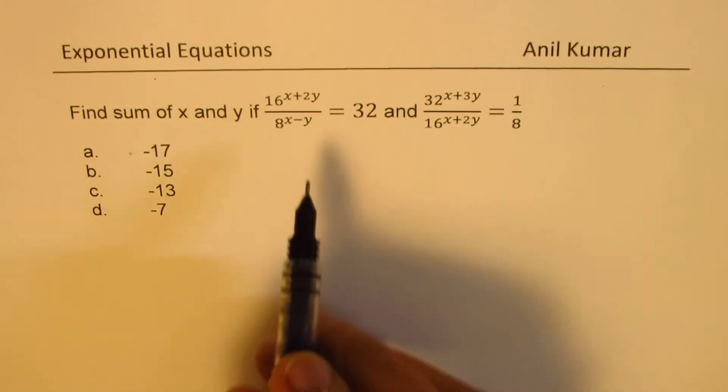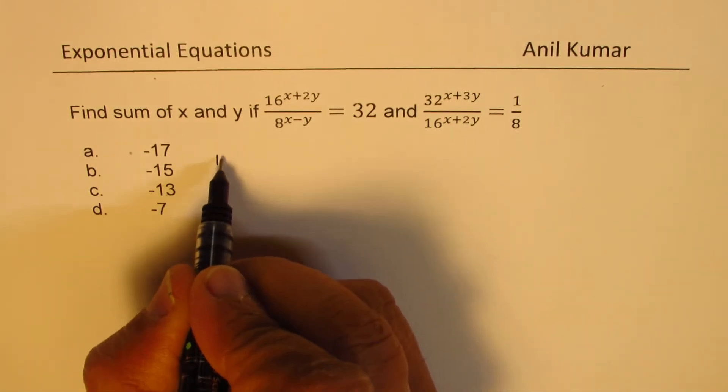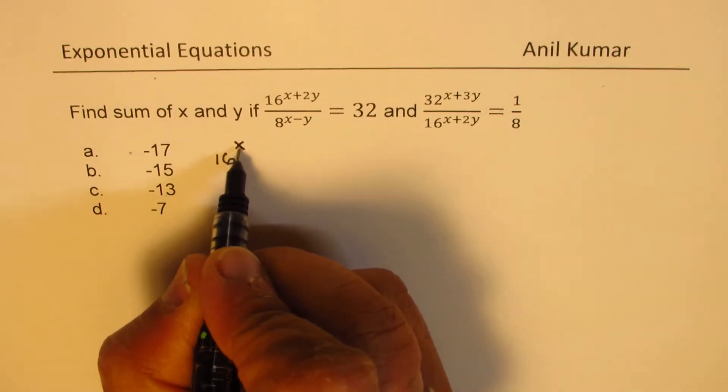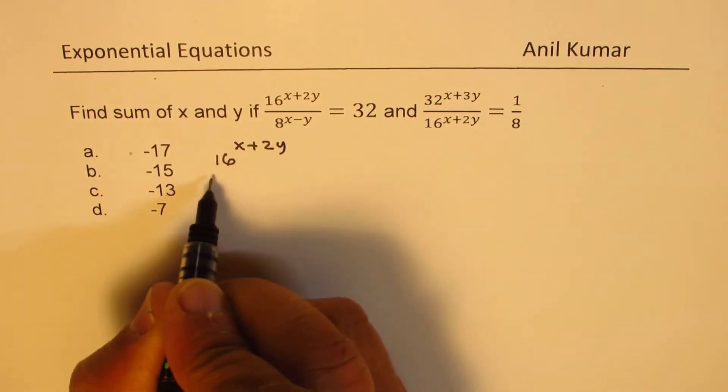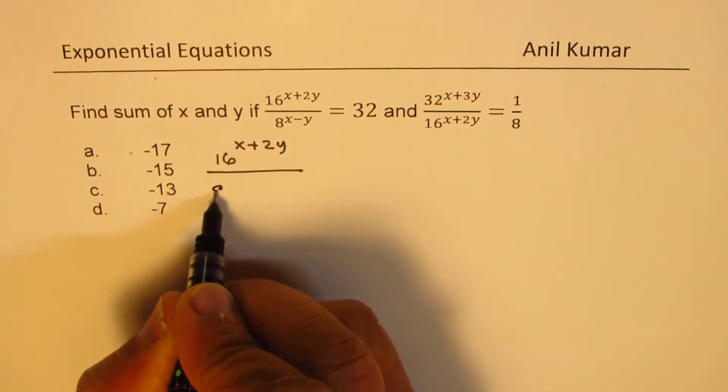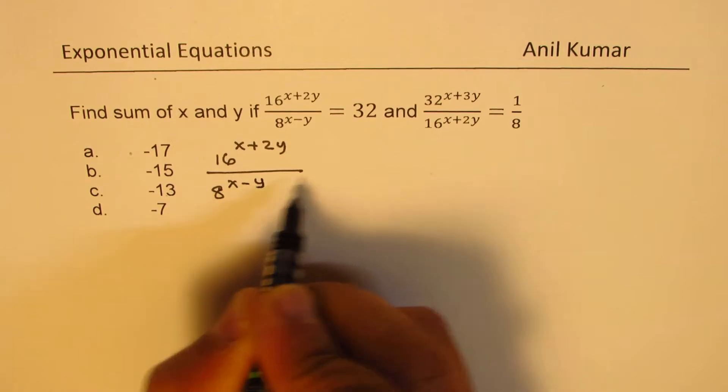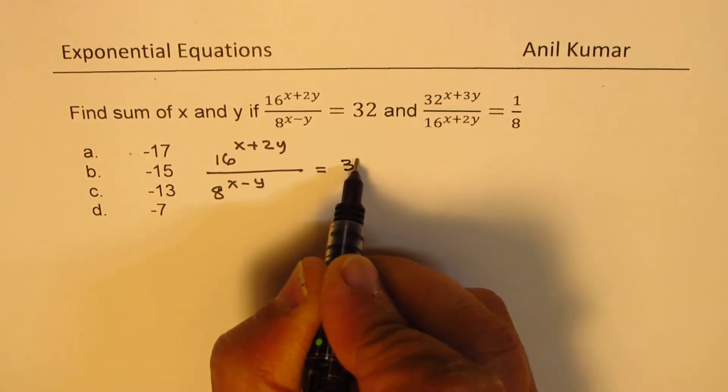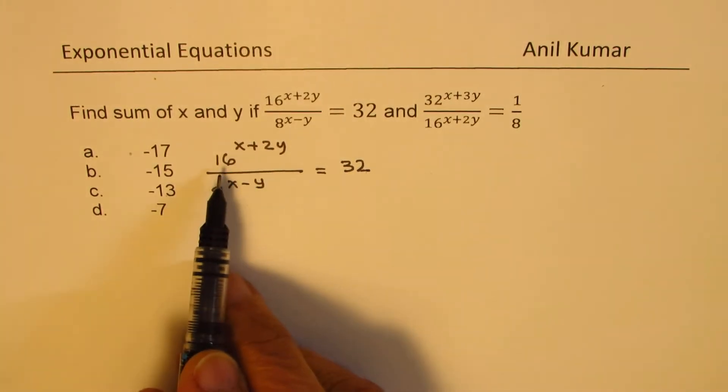So let's simplify the first equation which is given to us as 16 to the power of x plus 2y over 8 to the power of x minus y equals 32. We can write all the terms as powers of 2.